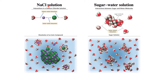Now let's look at covalent compounds, which do not dissociate in water. I have taken the example of a sugar molecule. Sugar is a covalent molecule containing carbon, oxygen, and hydrogen atoms. The oxygen atom is more electronegative than both carbon and hydrogen, so the oxygen gets a partial negative charge and the hydrogens get a partial positive charge in the sugar molecule.